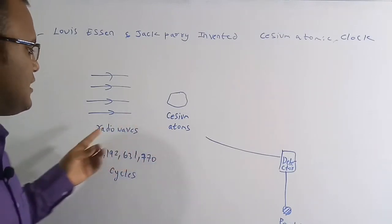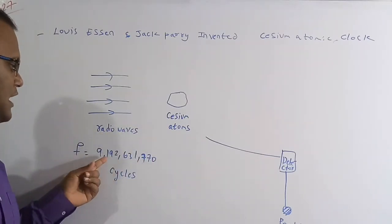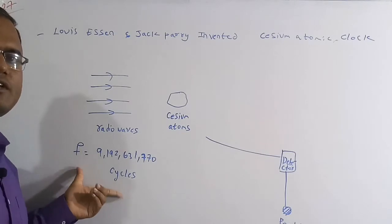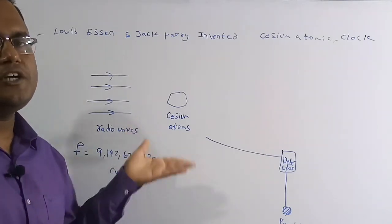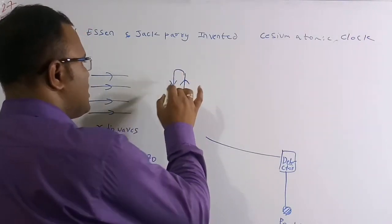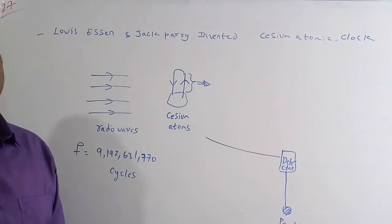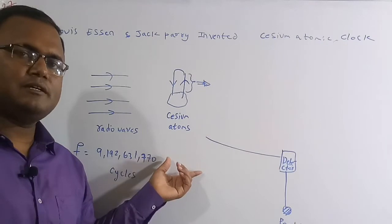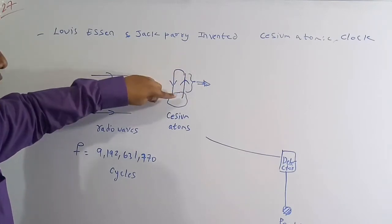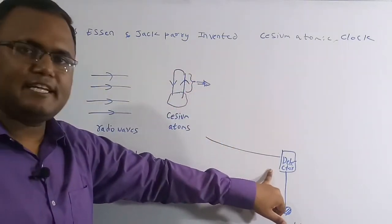Cesium atoms are placed in an excited state. If you pass radio waves with a frequency of 9,192,631,770 cycles per second, the cesium atoms go into the excited state. They then come back to the normal state, and this transition time period is constant everywhere. A detector detects this transition.